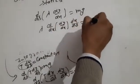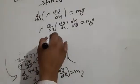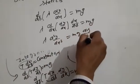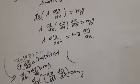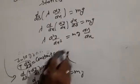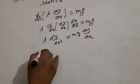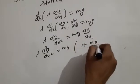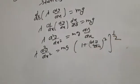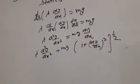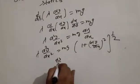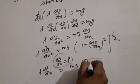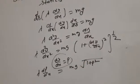F is equal to mg. L is equal to mg ds. This is equal to mg under root 1 plus p square lambda dp upon dx.